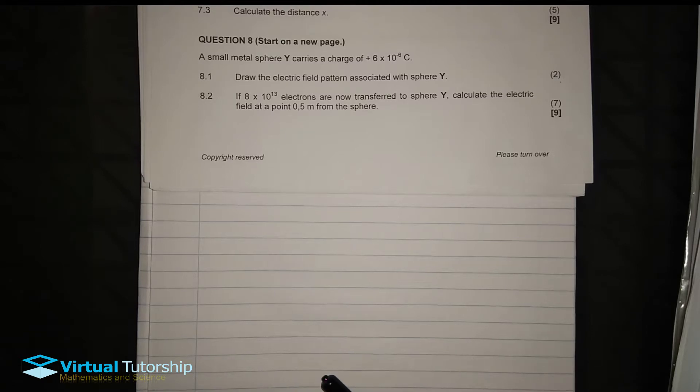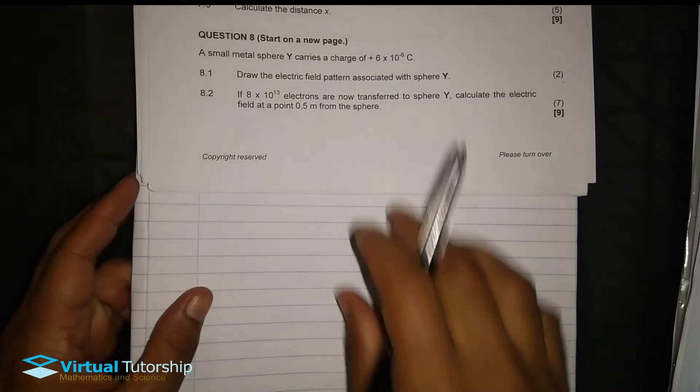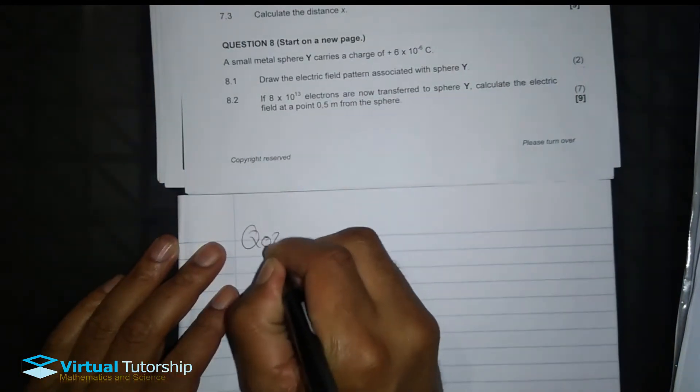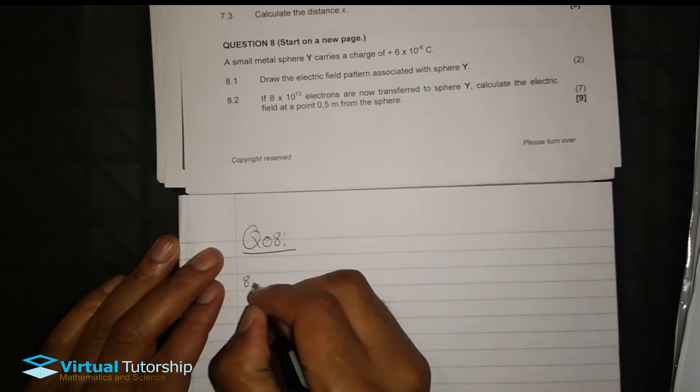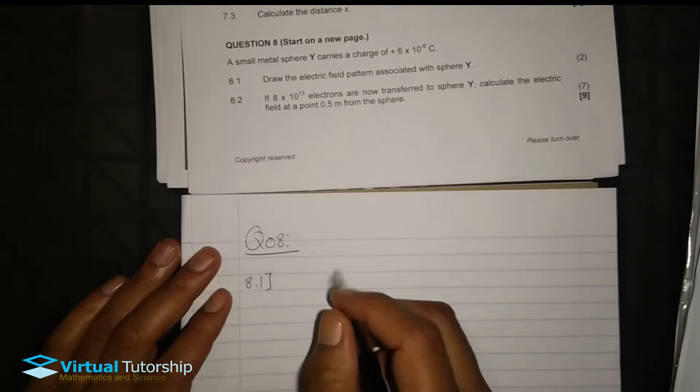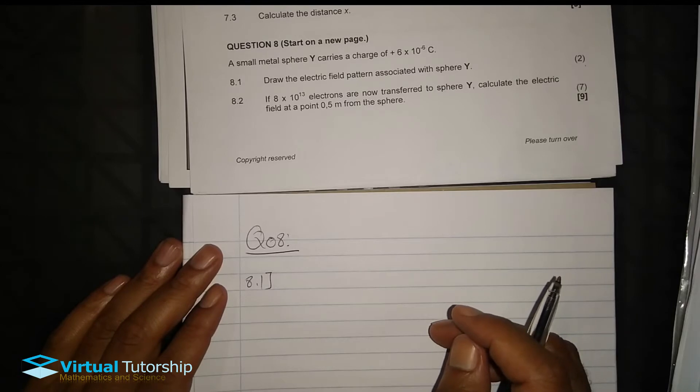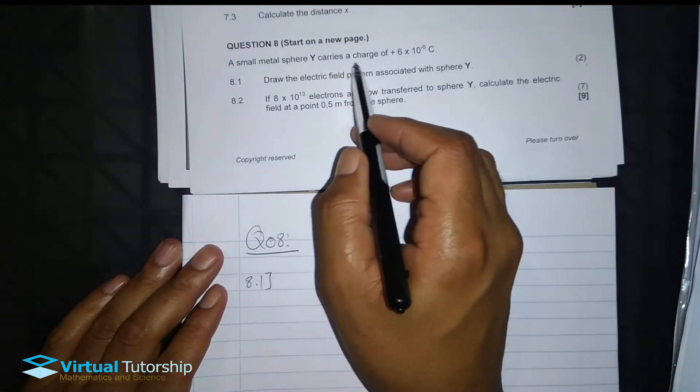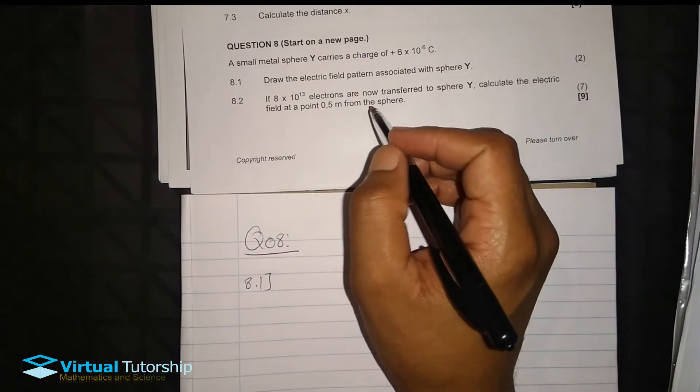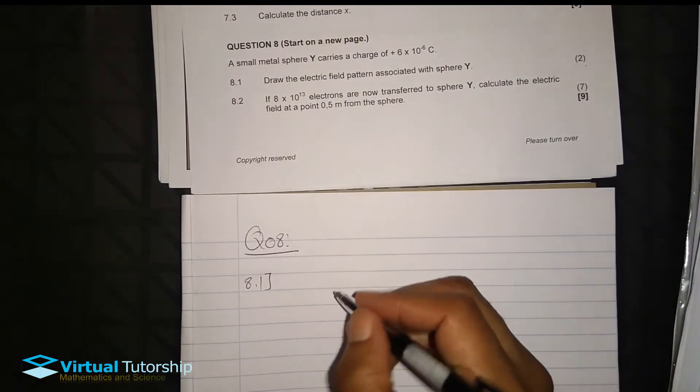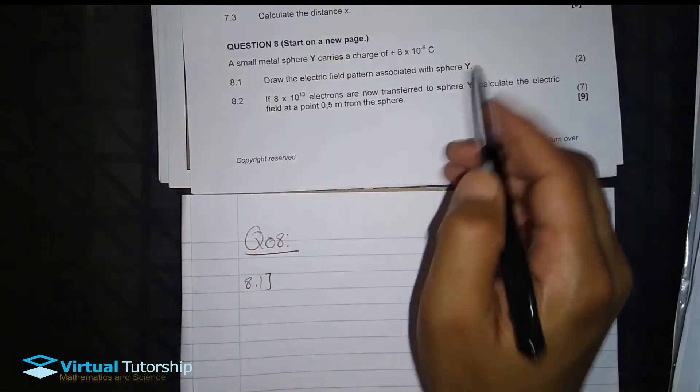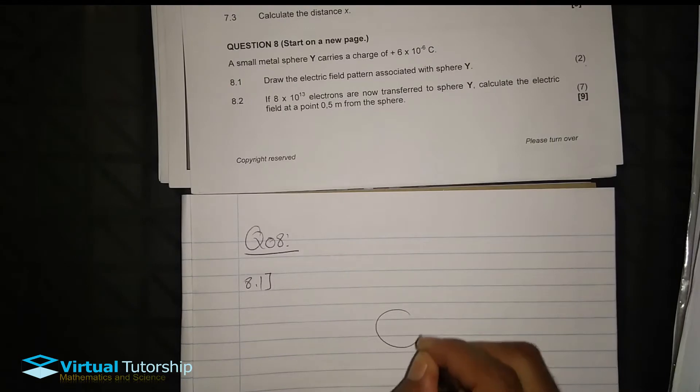There are electric field patterns that I have to focus on. Right, question 8, 8.1. What are they saying? A small metal sphere Y carries a charge of plus 6 times 10 to exponent minus 6 coulombs. And then 8.1, what is it? Draw the electric field pattern associated with sphere Y. Sphere Y, positive charge.